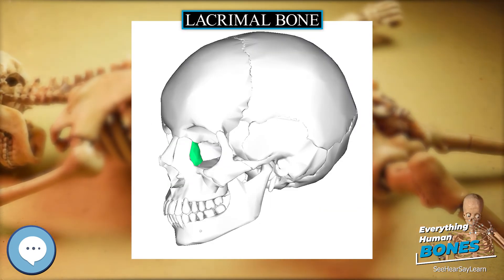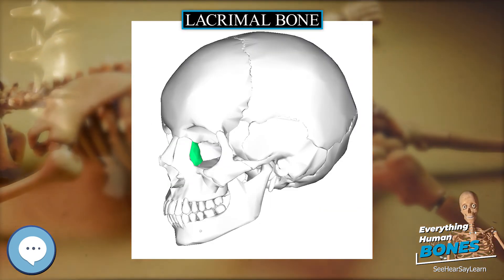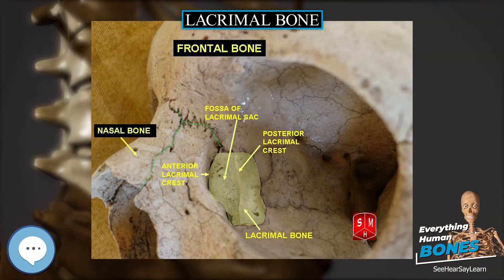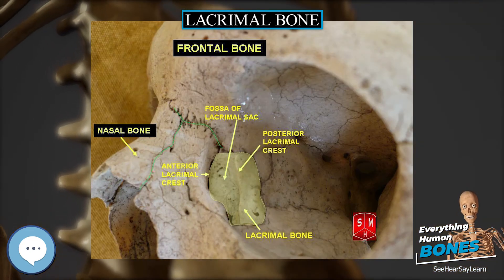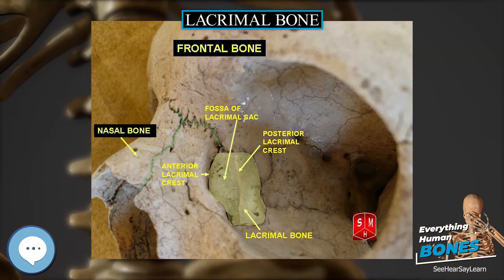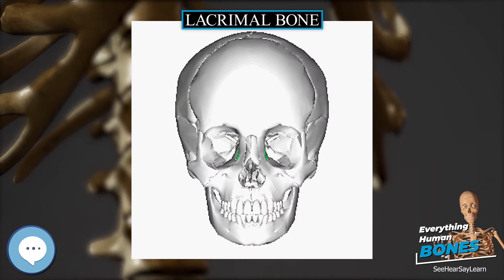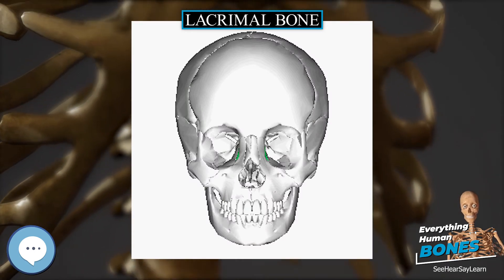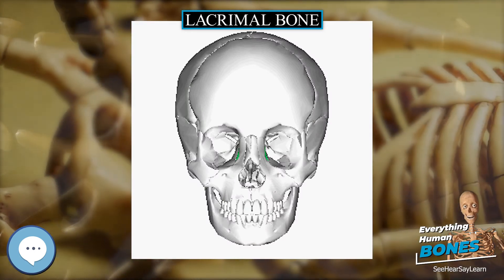The lacrimal bone is often smaller in living vertebrates and is no longer always directly associated with the nasal opening, although it retains its connection with the orbit. The bone is entirely absent in living amphibians, as well as some reptilian species.